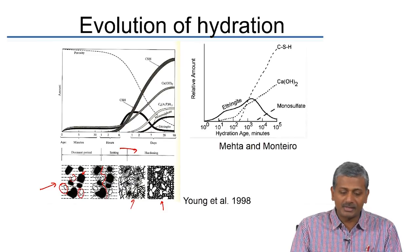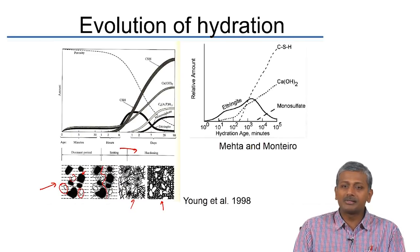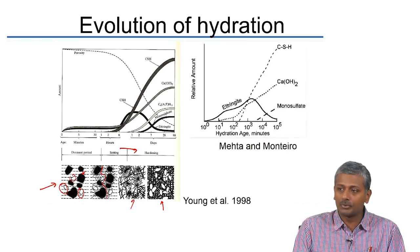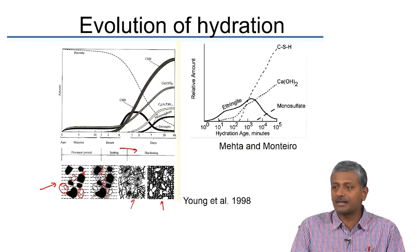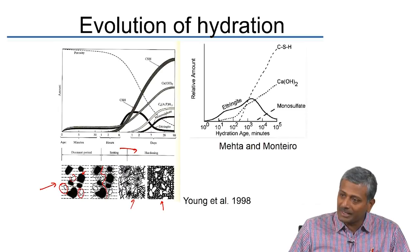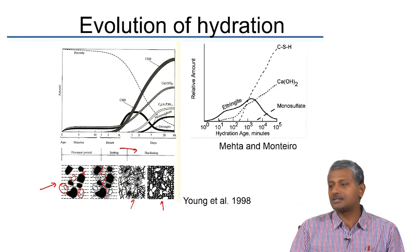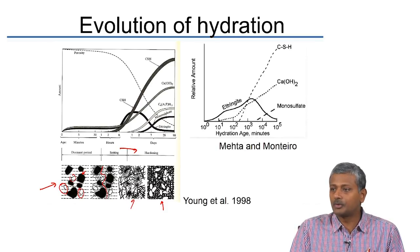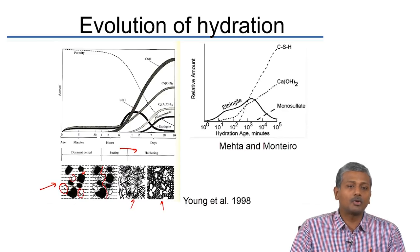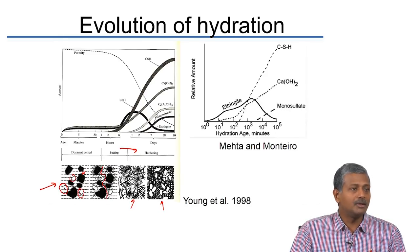Unreacted cement particles do not affect durability because they are simply blocking pores and reducing interconnectivity of the pore network, without participating in reactions. Any water or aggressive chemicals would need to make their way through a densely populated barrier of hydrated cement products to reach unreacted particles. Durability is primarily a function of the interconnectivity of the porosity. Higher water-cement ratio means more interconnected pores; lower water-cement ratio means less interconnected pores and better durability.